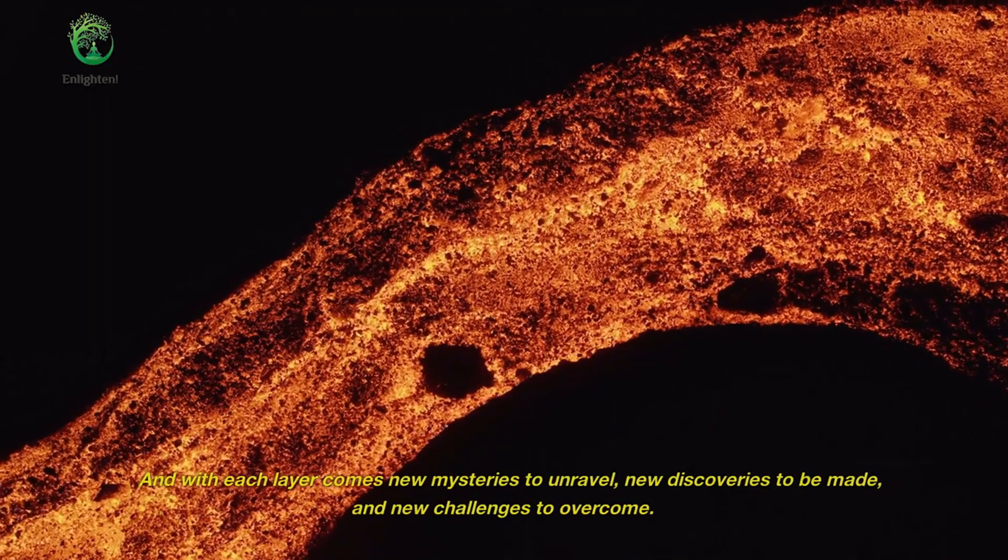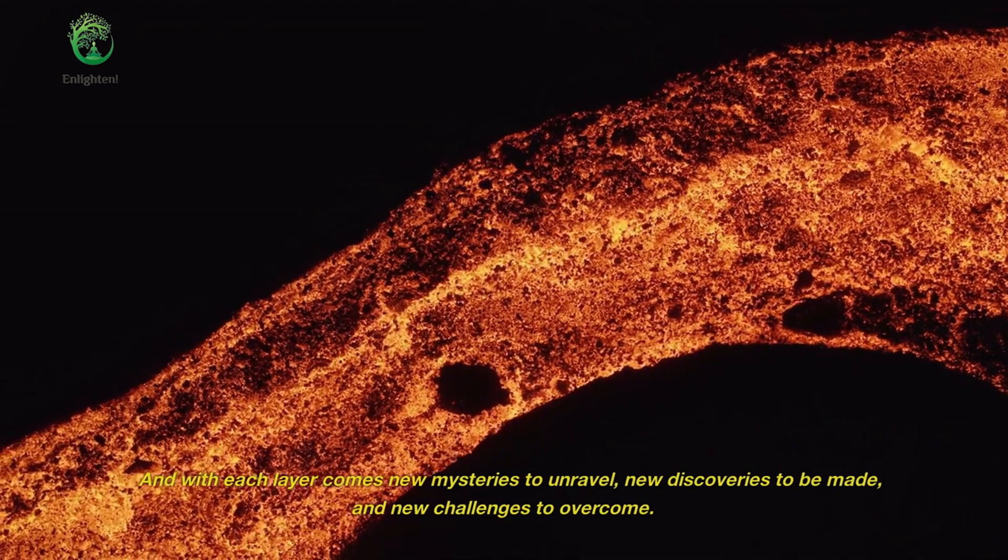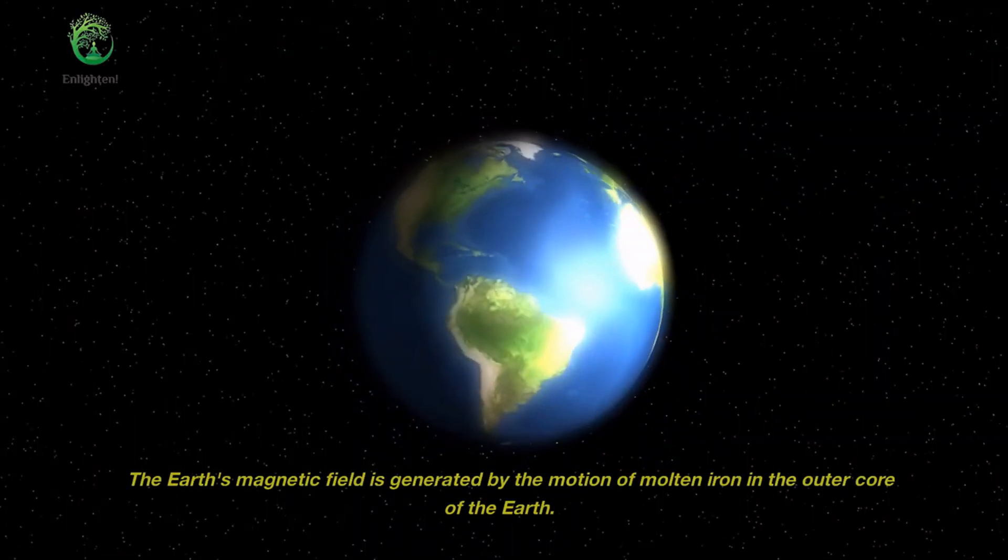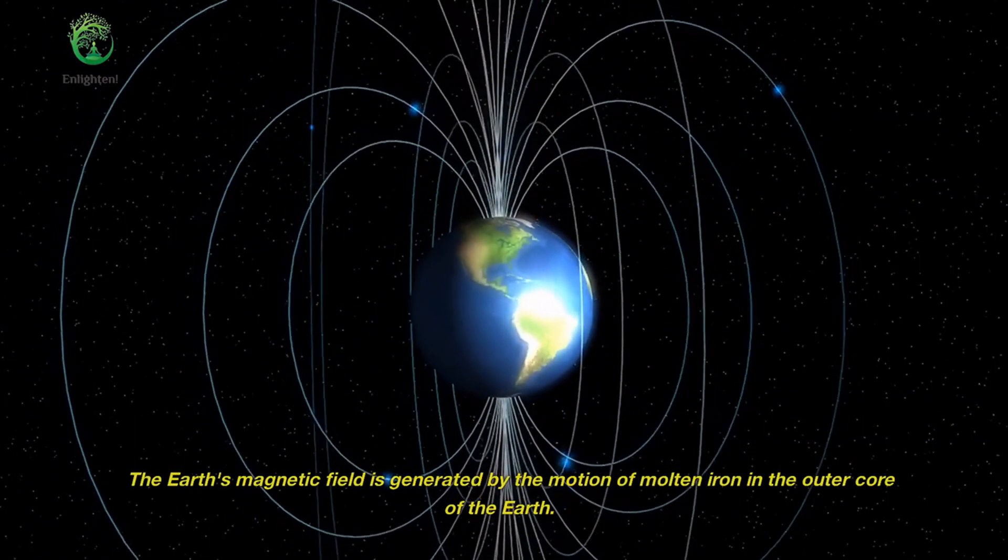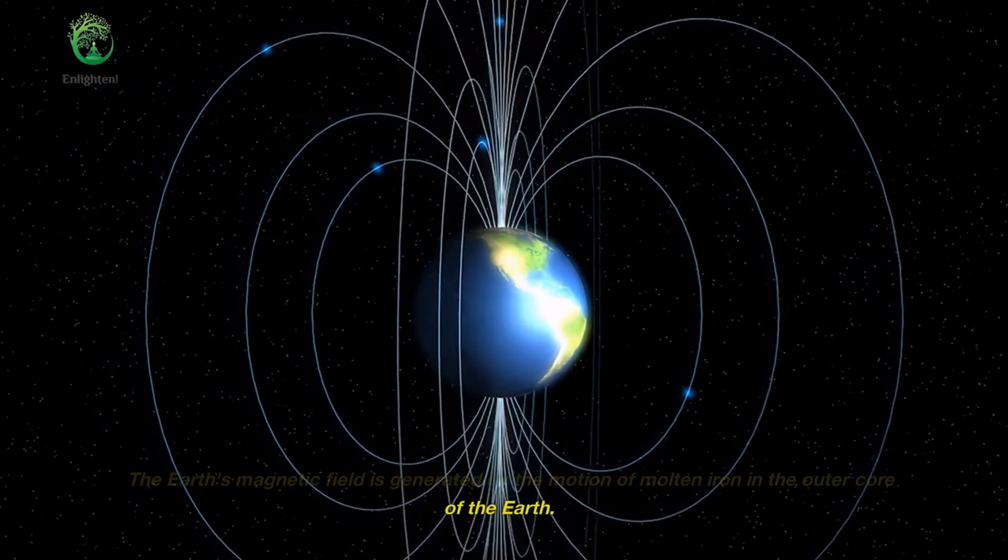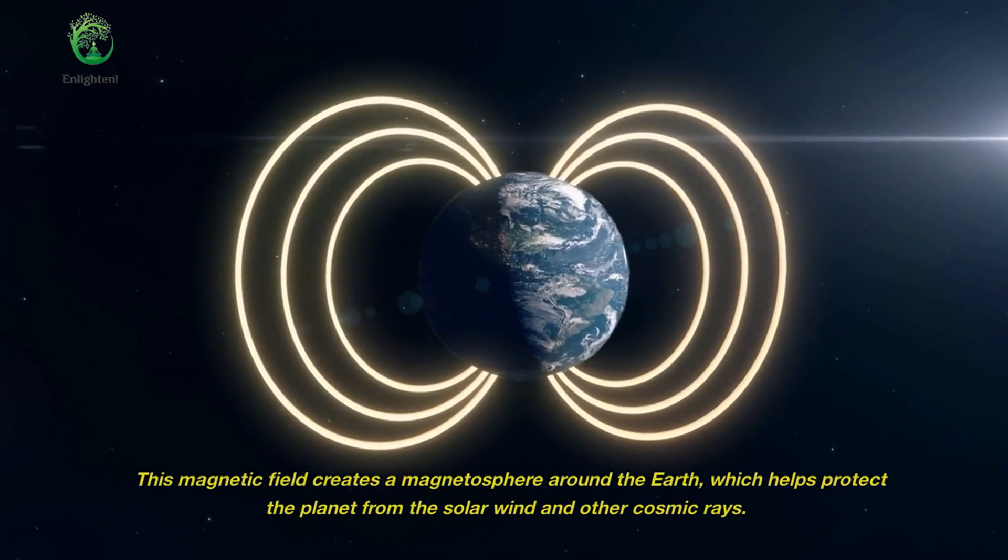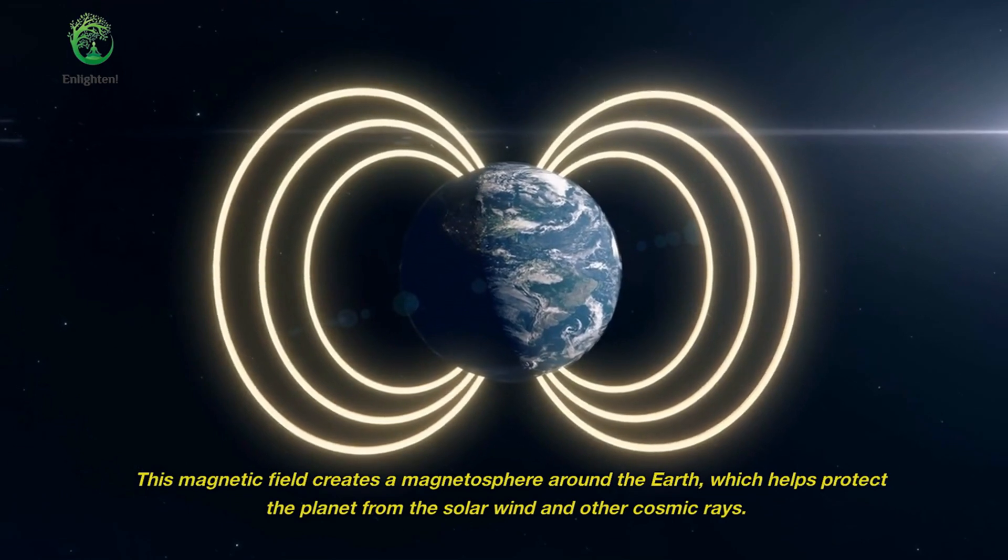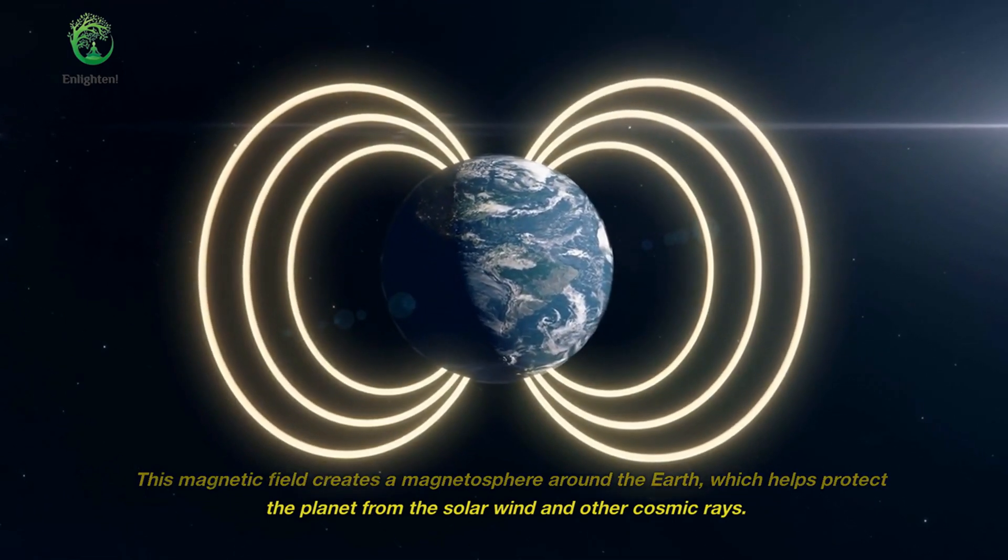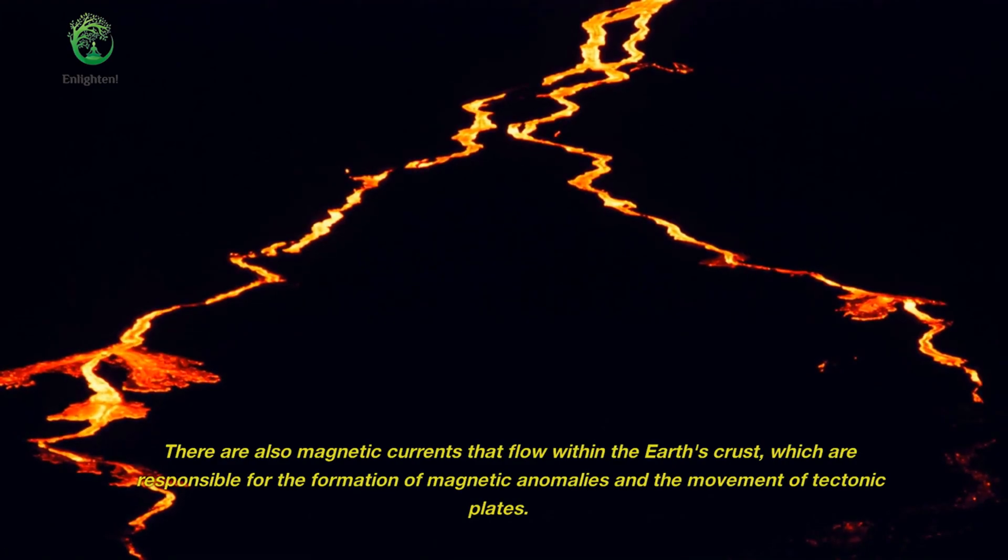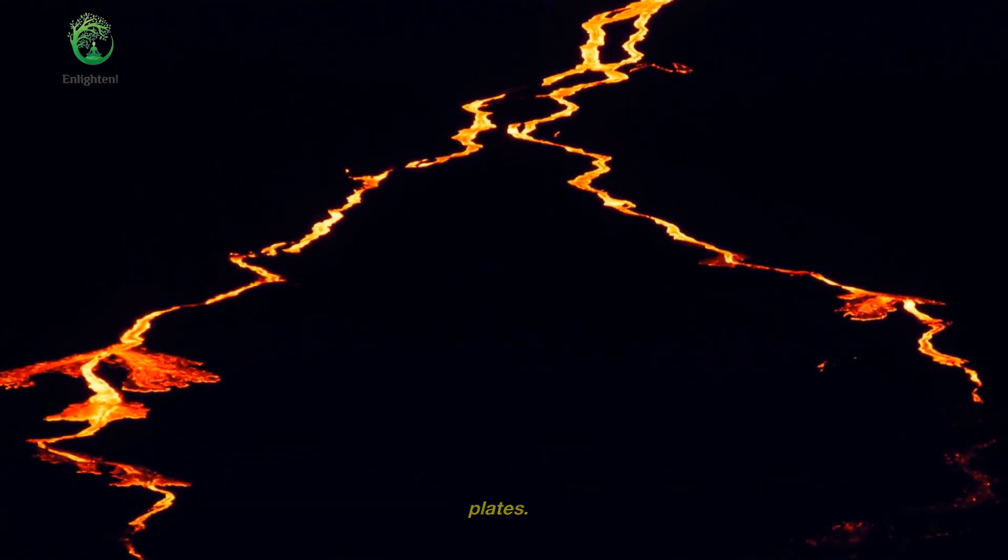And with each layer comes new mysteries to unravel, new discoveries to be made, and new challenges to overcome. The Earth's magnetic field is generated by the motion of molten iron in the outer core of the Earth. This magnetic field creates a magnetosphere around the Earth, which helps protect the planet from the solar wind and other cosmic rays. There are also magnetic currents that flow within the Earth's crust, which are responsible for the formation of magnetic anomalies and the movement of tectonic plates.